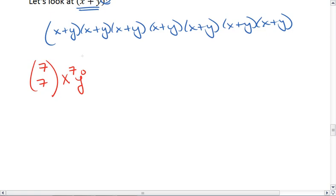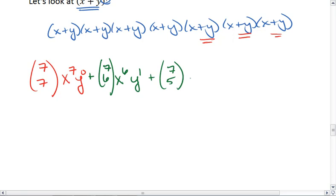I could then pick 6 x's and 1 y, which would give me x to the 6th, y to the 1st. But there's more than one way to pick 6 x's and 1 y. I could use my final y as the y, or the 2nd to last, or the 3rd to last, and pick x's from all the others. What I see is I'm choosing out of 7 x's, I'm choosing 6 of them. And this pattern continues. I could choose 5 x's out of the possible 7, which means I'll have 5 x's and 2 y's.